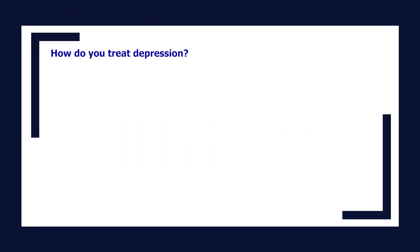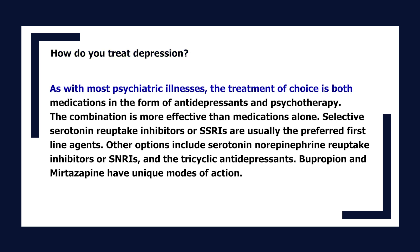How do you treat depression? The treatment of choice is both medications — antidepressants — and psychotherapy; the combination is more effective than medications alone. SSRIs are usually the preferred first-line agents. Other options include SNRIs and tricyclic antidepressants. Bupropion and mirtazapine have unique modes of action.